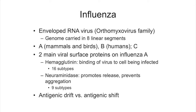We have to start with a basic primer on influenza. It's an enveloped RNA virus, and the important thing is that it has a genome carried in eight linear segments. Flu comes in three flavors: influenza A, which infects mammals and birds; influenza B, which only infects humans; and influenza C, which generally causes mild upper respiratory illness and doesn't give us the morbidity we see with A and B.